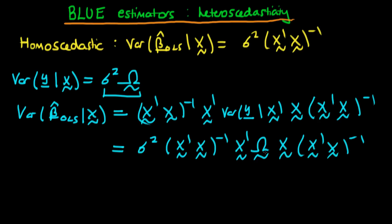I can't make any further simplifications to this expression because Ω doesn't have any particularly nice relationships with X. For example, if it were the identity matrix it would just leave X as it is, but that's not the case here. So this is the form of the variance of OLS estimators in the presence of heteroscedasticity, and note that it is not the same as the variance under homoscedasticity.